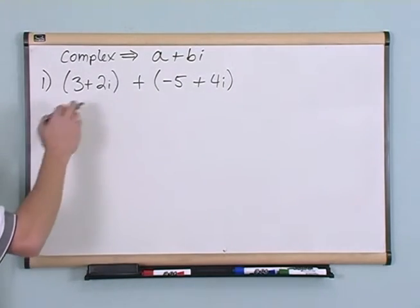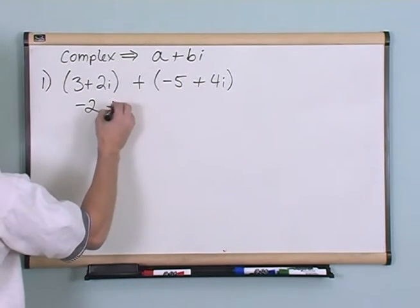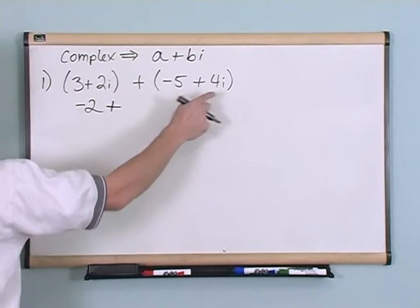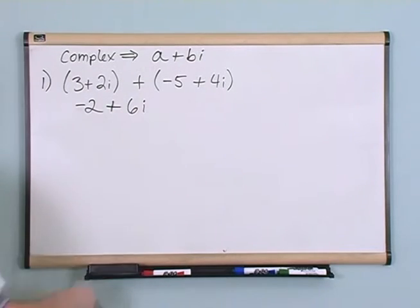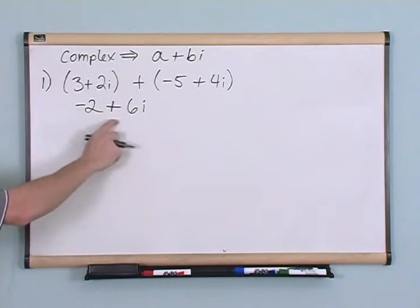So when you're adding complex numbers, 3 plus negative 5 is going to be negative 2, plus, this is a like term with this, 2i plus 4i is 6i. And that's the answer to that problem. And you normally write the real part first and the imaginary part second.